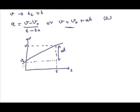This is the velocity-time graph for rectilinear motion with constant acceleration. From this graph, it is clear that velocity v at any time t equals the initial velocity plus the change in velocity, that is at. So v equals v0 (the initial velocity) plus at (the change in velocity), as shown in this relation.